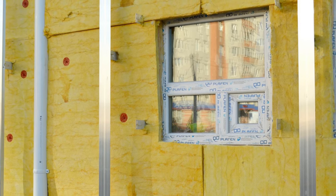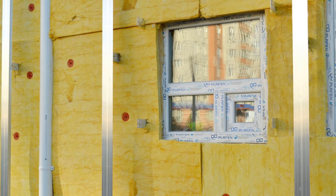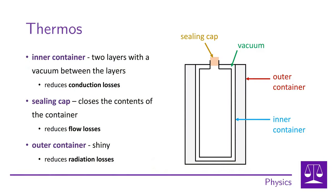In addition to heat loss in the home, we will learn about the principle of a device that stores heat, which is a thermos. A thermos flask is a device designed to maintain the temperature of the contents of a container, such as hot tea. Its principle of operation is to minimize heat loss and maintain the temperature of the contents for as long as possible. The basic parts of a thermos are the inner container, the sealing cap and the outer packaging.